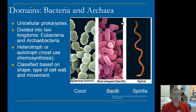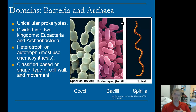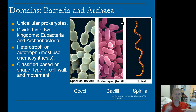The different shapes of bacteria are cocci, bacilli, and spirilla. Cocci are kind of spherical shapes. Bacilli are rod-shaped, so a little more elongated. And spirilla are spiral-shaped.